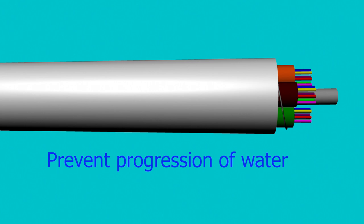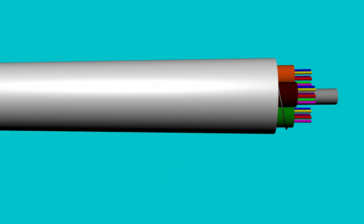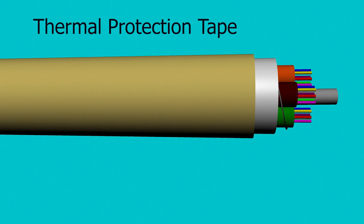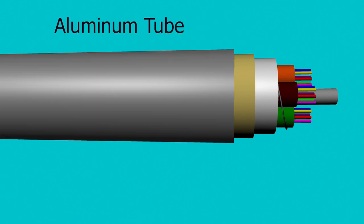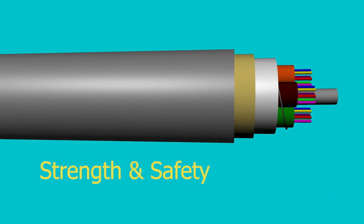In case of a large number of optical fibers, up to 144, multiple tubes are used. These tubes along with the FRP rod are then covered with water blocking yarn and tape. These water blocking and water swellable yarn and tape prevent the progression of water inside the cable.